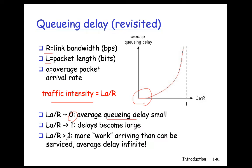The other extreme is when the traffic intensity is greater than one — there are more bits coming in than going out. As time goes on, newly arriving bits need to wait longer and longer, approaching infinity. When the intensity is between very small and one, the delay simply grows, and approaching one it grows quickly — close to an exponential trend. So queuing delay is very hard to estimate.